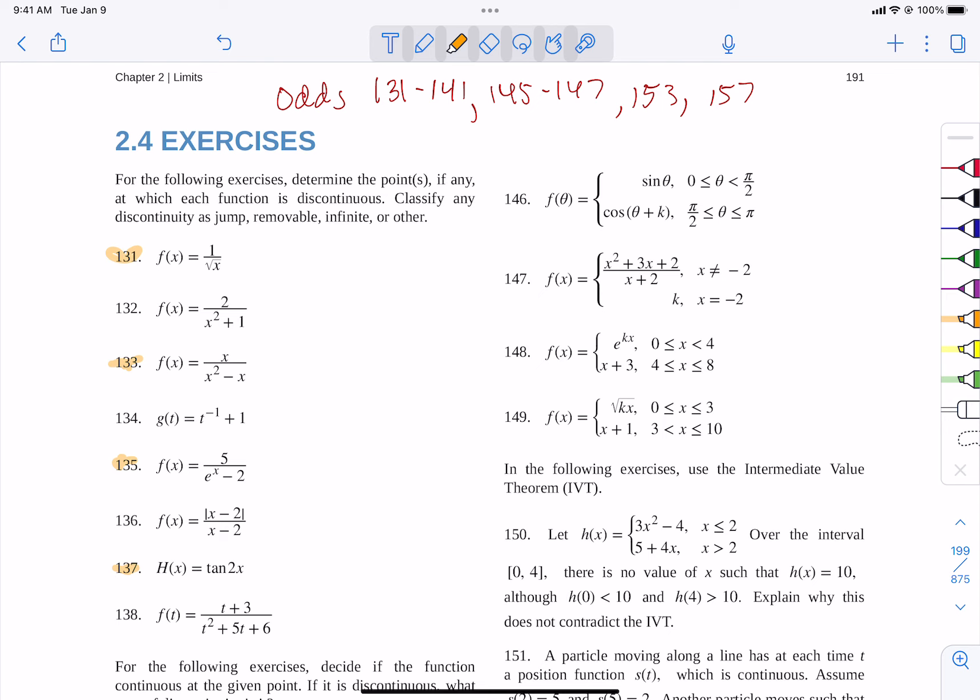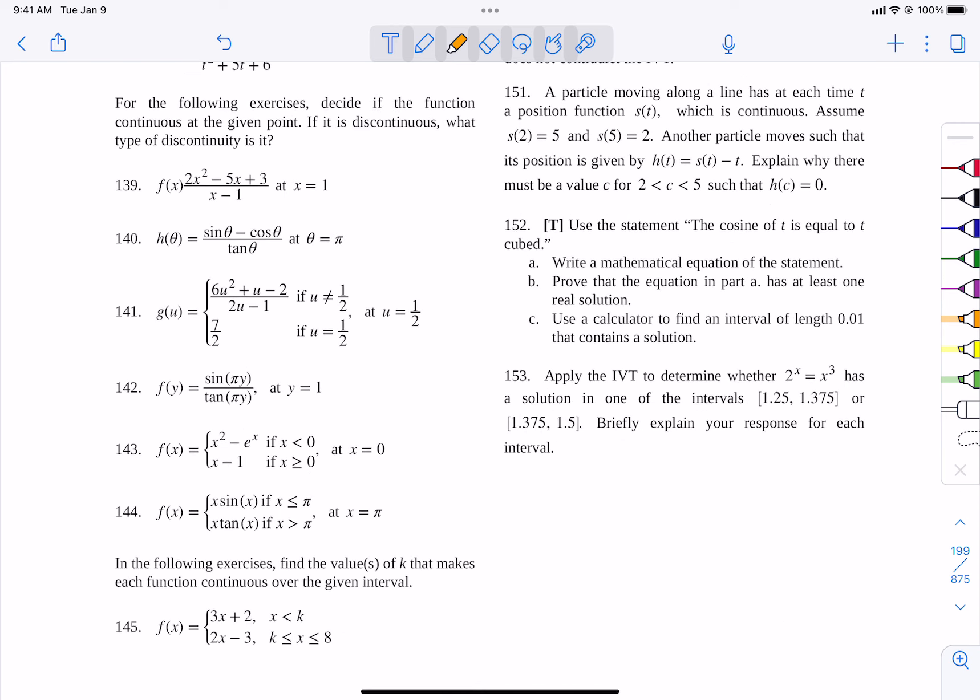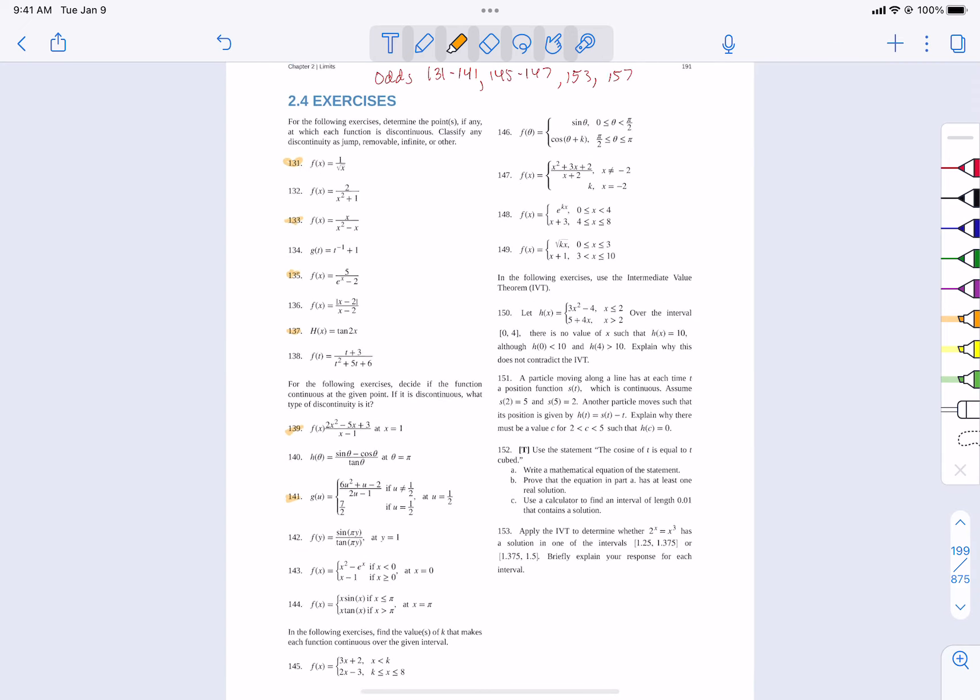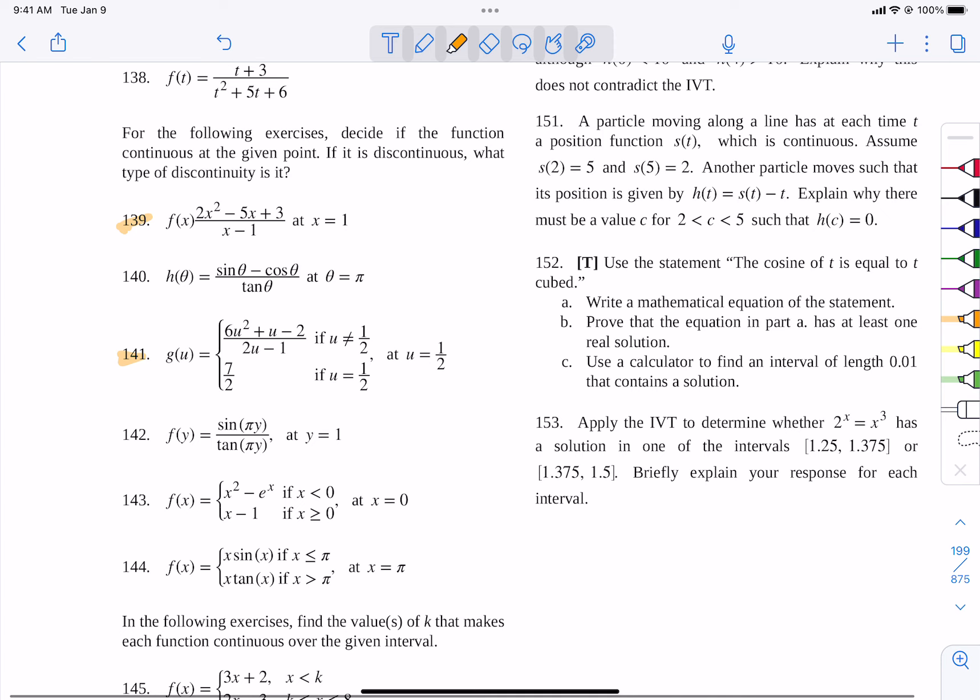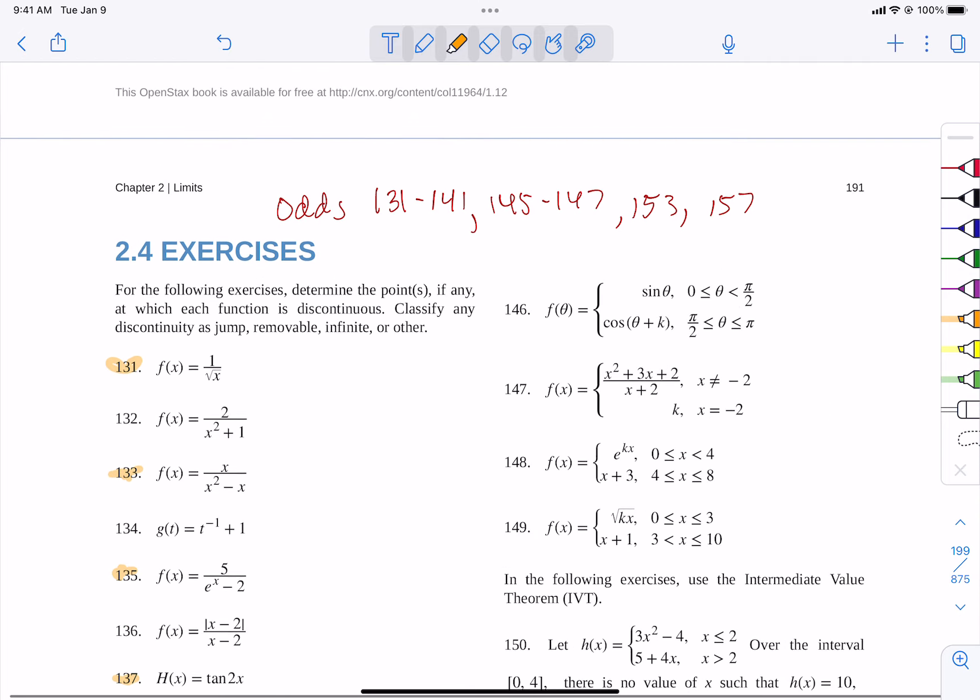So in this first section here, from 131 to 137, it says, for the following exercises to determine the points at which the function is discontinuous. Classify each discontinuity as a jump, removable, infinite, or other. So just think for our fractional functions, your denominator can't equal zero. Square roots have to be greater than or equal to zero.